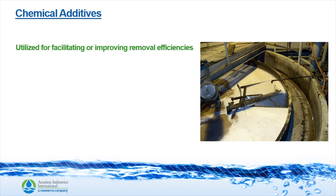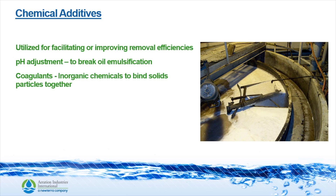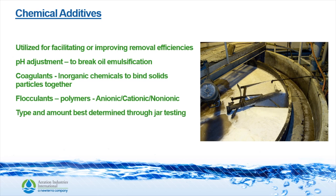Now I would like to touch on why you might add chemicals to the system. By adding chemicals, you can increase flocculation and improve your removal efficiencies. You can use chemicals to adjust the pH so you can break the oil emulsification. Coagulants are used to bind particles together, and coagulants like polymers are used in the settling process. The best way to determine what chemicals are best for your system is to do jar testing.